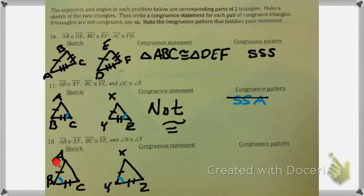So now we have side, angle, side, side, angle, side. They're both side-angle-side. So my congruent pattern would be side, angle, side.